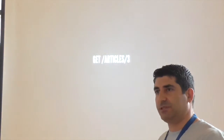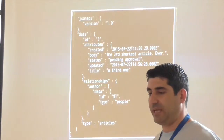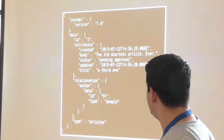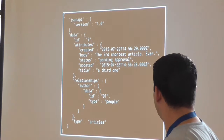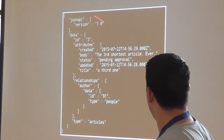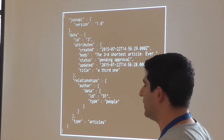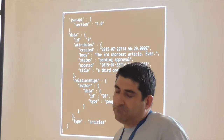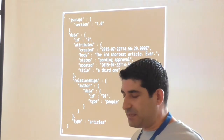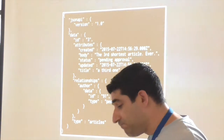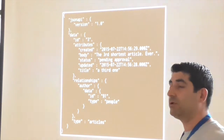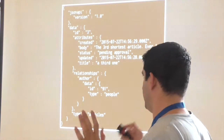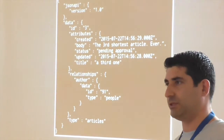The next example is exactly the same, but we're asking for a specific ID, so the data part is just one object — not a collection. This is how the spec defines it, so we stick to that. We might make local changes for our internal use, but for the external CPAN distribution, we're sticking to the spec — we want to be spec-compliant.